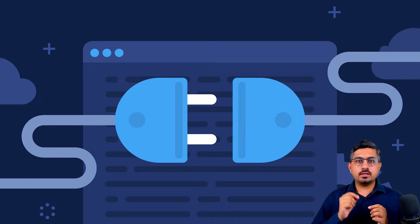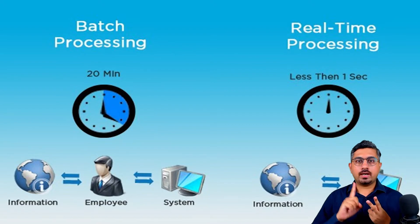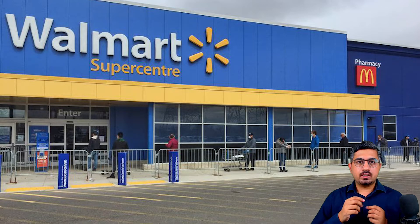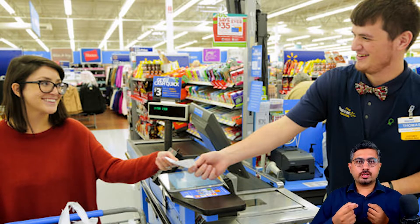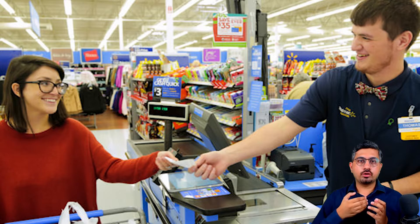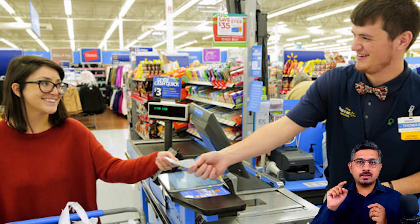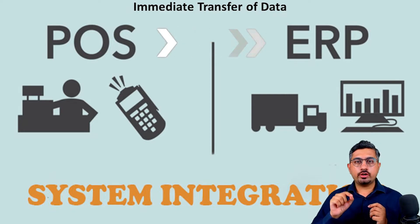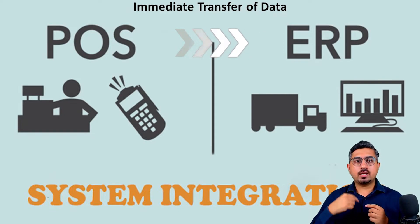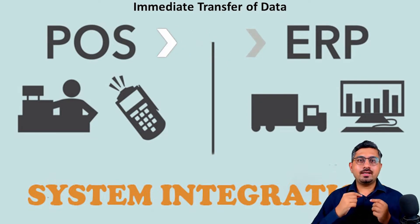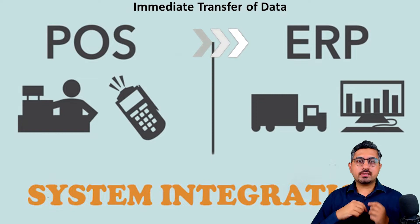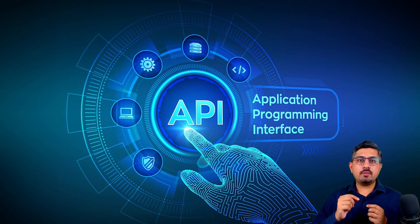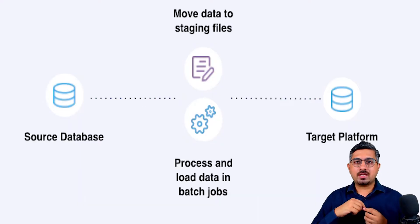Looking at the approaches used in integrations, there are two types: batch mode and real-time. Taking the Walmart example — suppose you are a customer at Walmart, you go to the checkout counter, the clerk enters your purchase details and generates the bill. If Walmart wants that information to be recorded in the ERP immediately at the time the bill is generated in the point-of-sale system, that is called real-time integration, and to build such integrations, APIs are typically used.